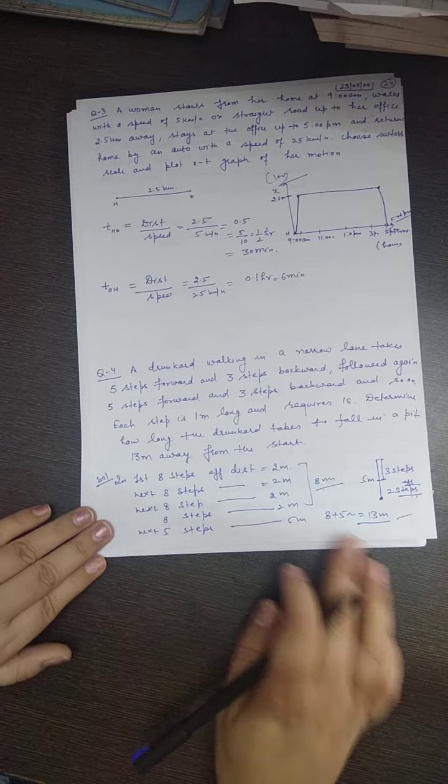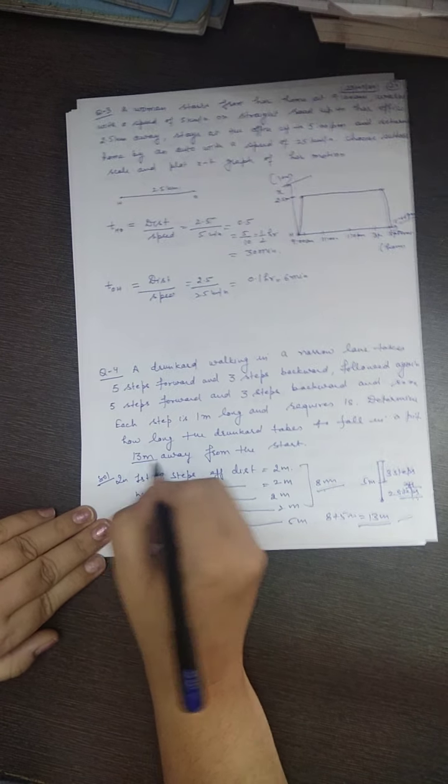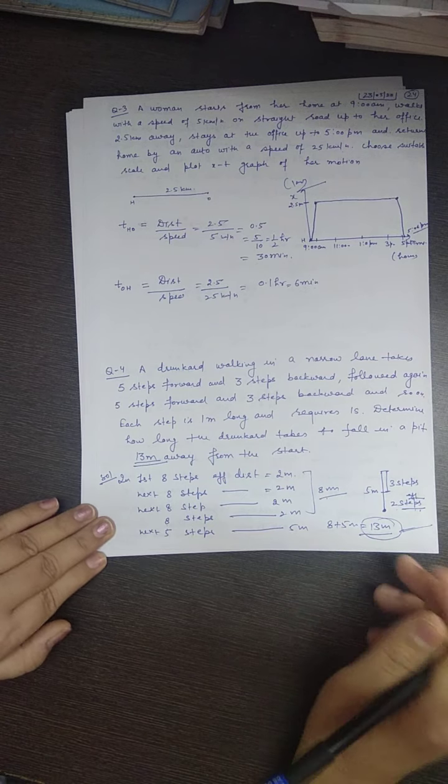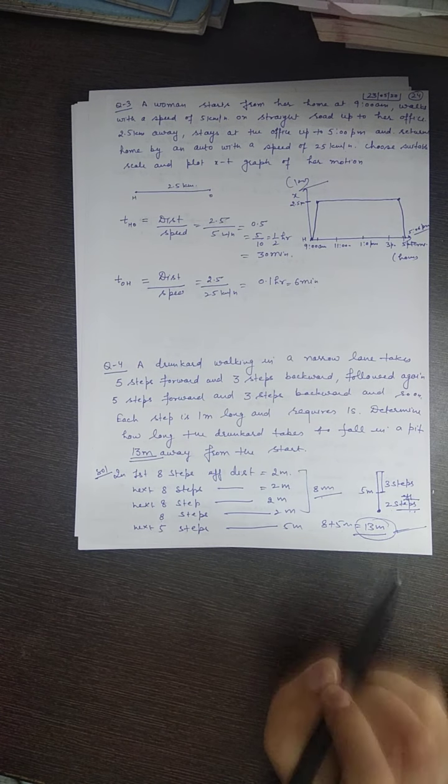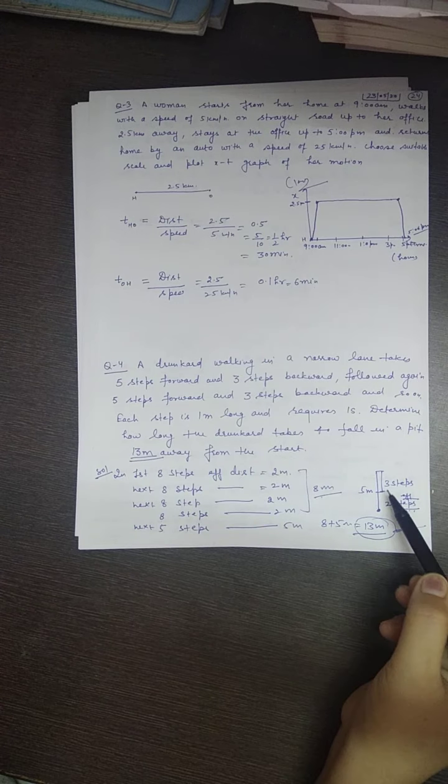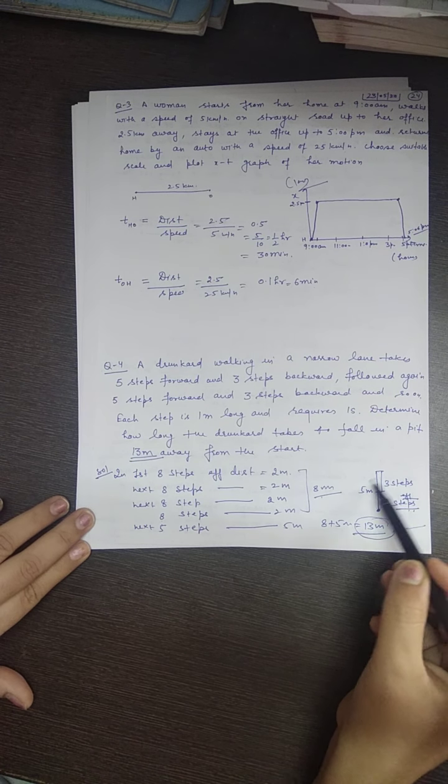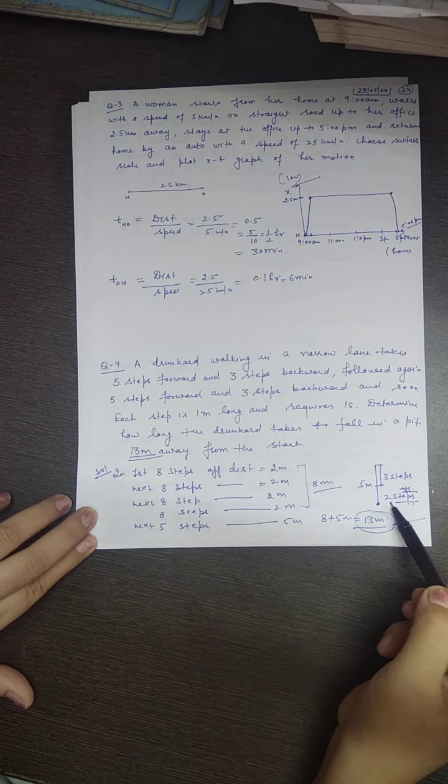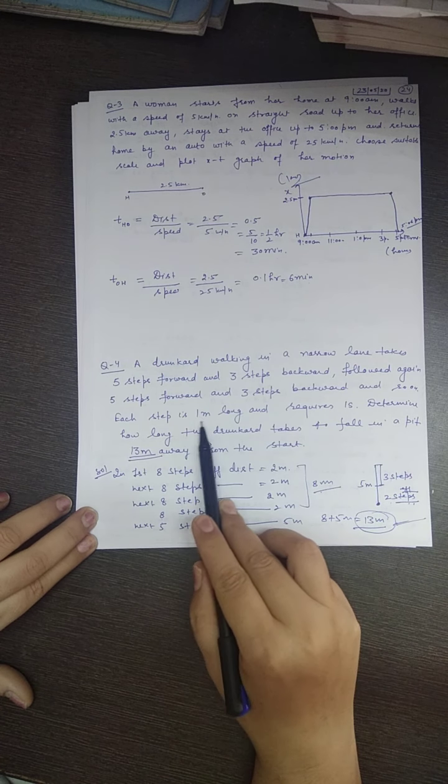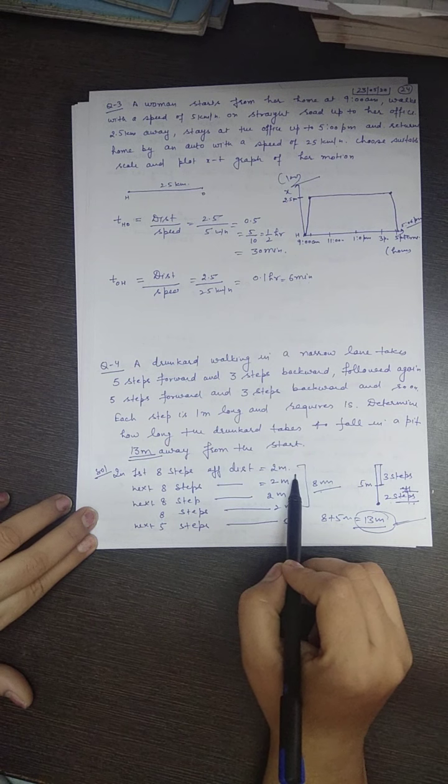The drunkard will fall into the 13-meter pit. Let's review: when he goes 5 steps forward and 3 steps backward, he takes a total of 8 steps. In 8 steps, the effective distance covered is 2 meters. One step is one meter long, so 2 meters distance.